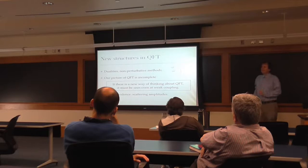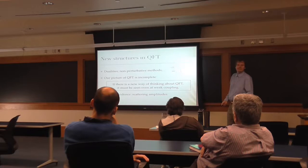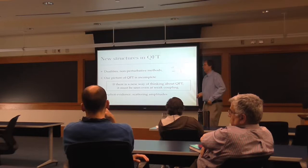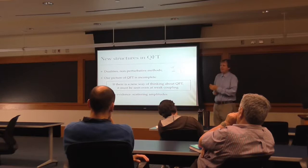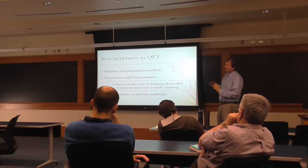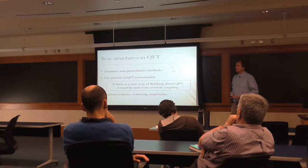The punchline is: if there is some new picture of how to think about QFT which replaces everything, we have no idea what it might be. But the avatars of that should be seen even at weak coupling. When Lagrangians and Feynman diagrams work perfectly, if we see something new there, it will be evidence that even more is going on. At the moment, in the case where we know most — planar N=4 super Yang-Mills — the perturbation series is actually convergent, a very luxurious position.